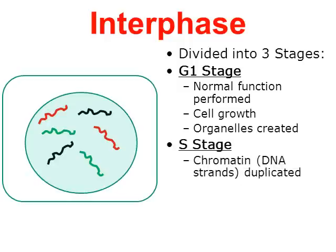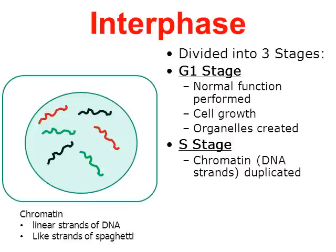Next comes the S stage, and the S stands for the word synthesis, which simply means to make. Something is made during the S stage, and that something happens to be DNA. In the picture here — this is going to be an animation — we have six pieces of chromatin in the cell: two red, two black, two green, representing the strands of DNA known as chromatin. Watch the animation — you can see the chromatin was duplicated. That's characteristic of the S stage of interphase.